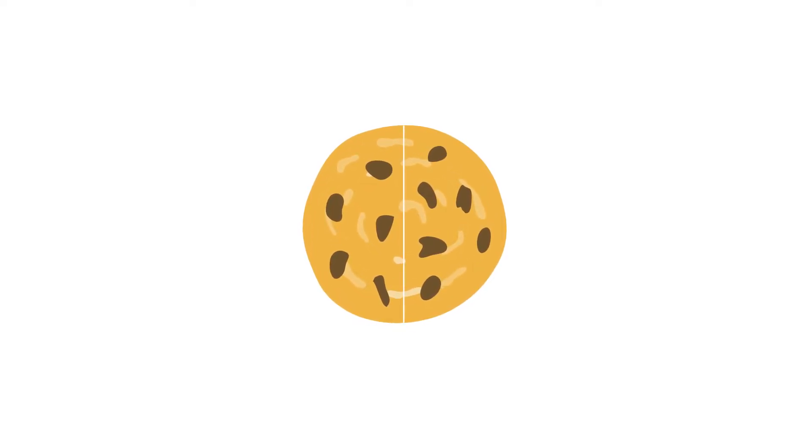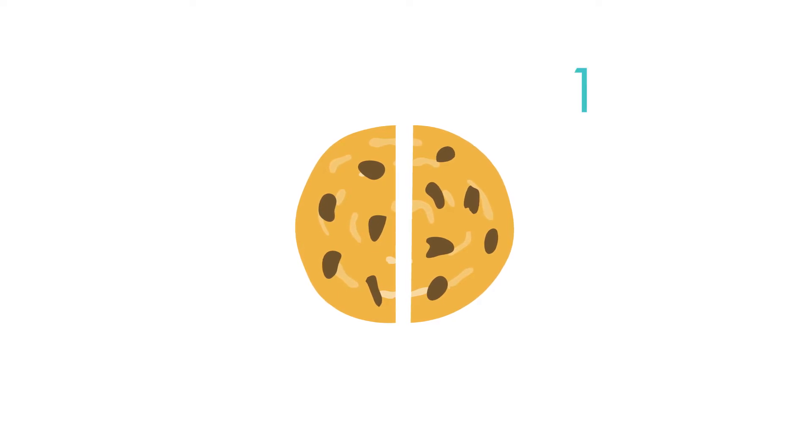You would divide the whole cookie into two parts. Each piece is equal. This is one piece out of two pieces. Each piece is one half of the whole cookie.